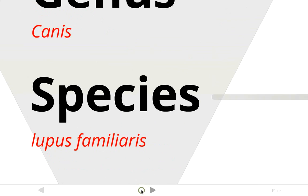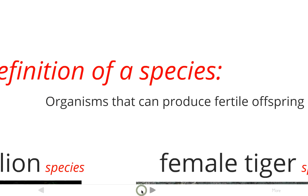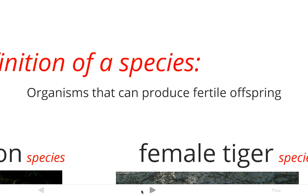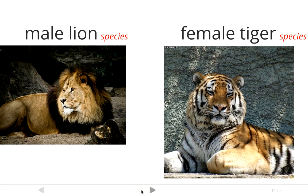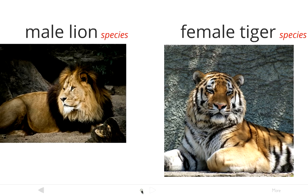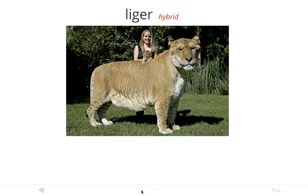One more important concept is the definition of a species. A species is defined as organisms that can produce fertile offspring — basically any group of similar organisms. All dogs are the same species, all lions are the same species, all tigers are the same species. For example, a male lion and a female tiger can produce offspring called a liger, but the liger is sterile and cannot reproduce. Because the offspring can't further reproduce, the liger is not actually a species, and the lion and tiger are considered separate species.